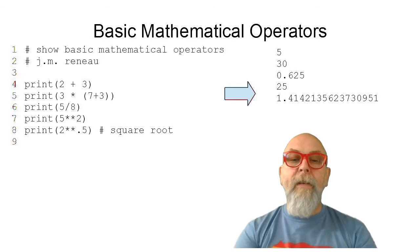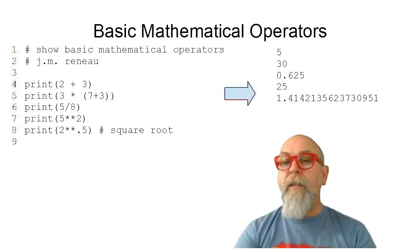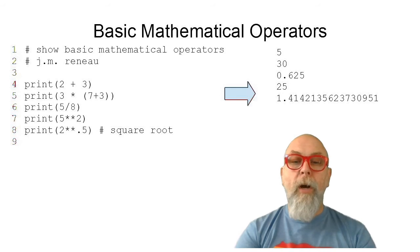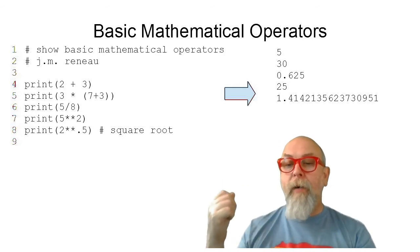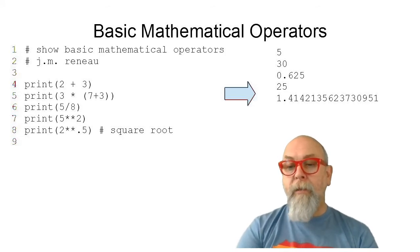The next one is 5 divided by 8, and you see that's 0.625. You see that 5 star star 2 would take 5 to the second power, which gives us the integer 25, and 2 star star 0.5, because if you remember that taking something to the half power is the same as the square root, gives us the square root of 2, 1.4142 approximately.